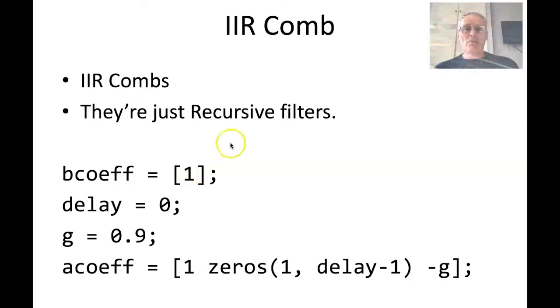We can build IIR combs very easily within MATLAB. We make a B coefficient equal 1, delay in this case is 0, so the A coefficients are going to be equal to 1, then the zeros get inserted here, and minus this gain coefficient. As I change the value of delay, I can make a longer delay term that gets multiplied by this minus G coefficient.